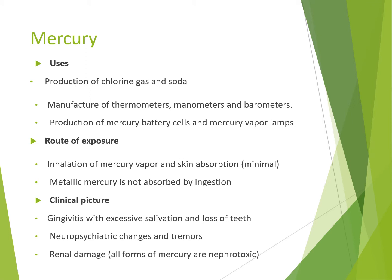لما نيجي للمركري: Mercury is used in the production of chlorine gas and soda, manufacturing of thermometers, manometers, barometers, and production of mercury batteries. Route of exposure: either by inhalation of the vapor, or skin absorption (which is very minimal). But mercury cannot be absorbed by ingestion - it cannot be absorbed through the GIT.